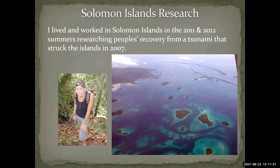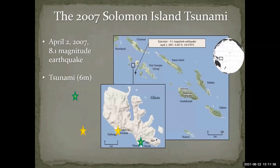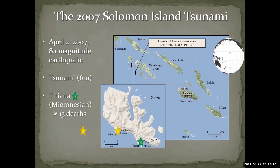I lived and worked in Solomon Islands in the 2011–2012 summers, researching people's recovery from a tsunami that hit them in 2007. For those of you that don't know where Solomon Islands is, it's located just northeast of Australia in the South Pacific. On April 2nd, 2007, an 8.1 magnitude earthquake struck just about 40 kilometers south of Gizo Island, where Titiana and Pailange are. Within minutes, it generated a massive tsunami up to six meters in some places that struck the southern coast of the island. One of the most severe impacts was in the Micronesian village of Titiana — every structure in the community was destroyed or heavily damaged, and 13 Titiana villagers died. It was the highest fatality rate in the whole country, many of them small children.